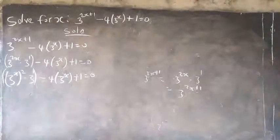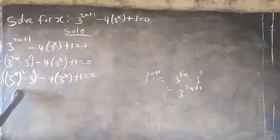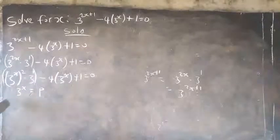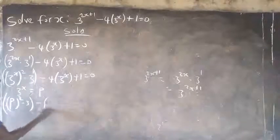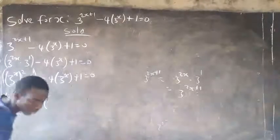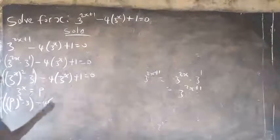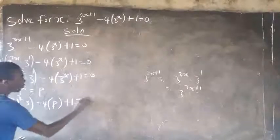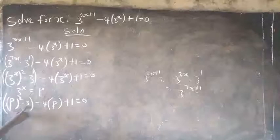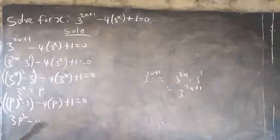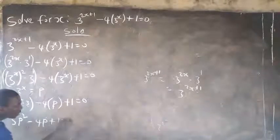We have 3 raised to the power of s appearing here and here. So let's say 3 raised to the power of s equals p. I'll substitute p for 3 raised to the power of s in both expressions. So this one will be p raised to the power of 2, multiplied by 3, minus 4 into p plus 1, equals 0.